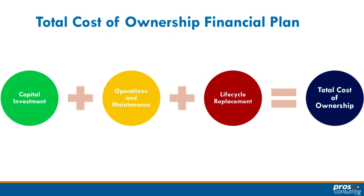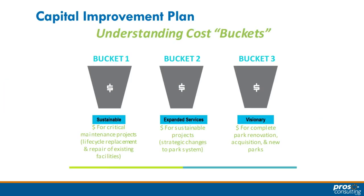Anything you build doesn't last forever, so there's always a life cycle replacement component. There will be opportunities in your system to just replace playgrounds, ramadas, or athletic field lighting, but none of that happens all at the same time. As we make recommendations, we're going to look at all these costs so you know what you're getting into — in terms of one-time dollars, what you need to appropriate annually for operations and maintenance, and keeping an eye on future life cycle replacement. We'll create cost estimating in three buckets.